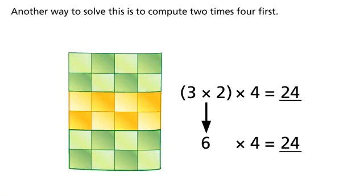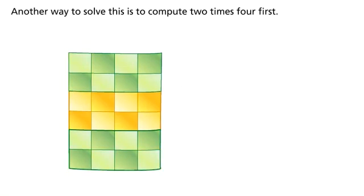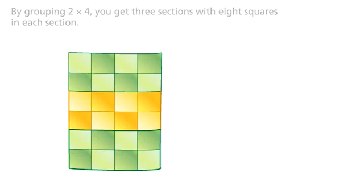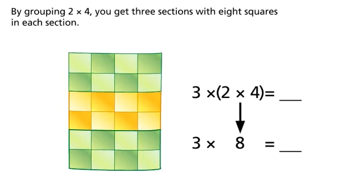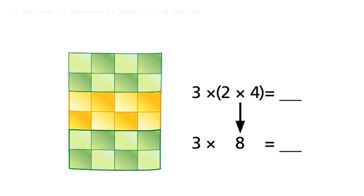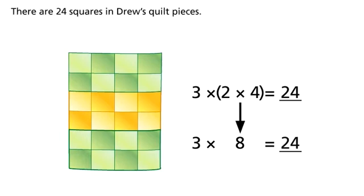Another way to solve this is to compute two times four first. By grouping two times four, you get three sections with eight squares in each section. There are 24 squares in Drew's quilt pieces.